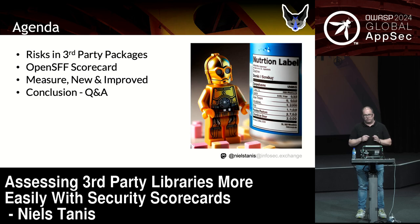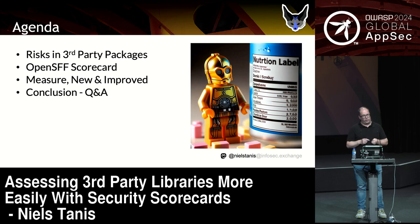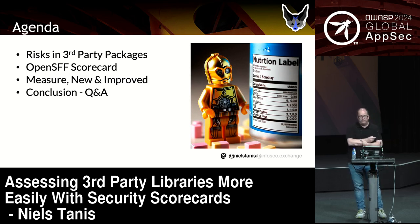That's exactly what we're going to do. I'm going to talk about some of the risks we're facing — some stories you've probably already heard. Then we're going to move into the OpenSSF scorecard, which feels a bit weird at an OWASP conference, but it's an open source project with goodness in it. Then we'll look at metrics to show scorecards have value. And at the end there will be Q&A, and I'll be around for the rest of the conference.